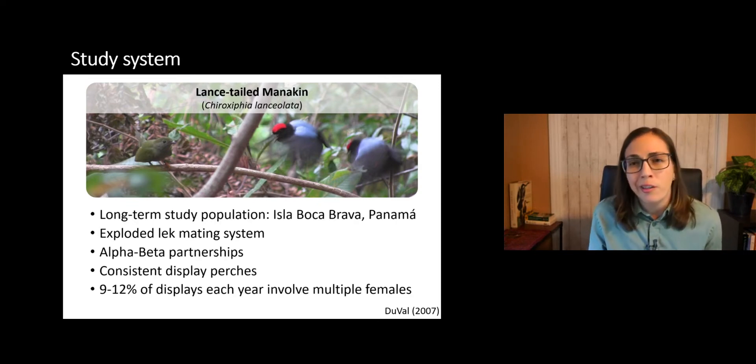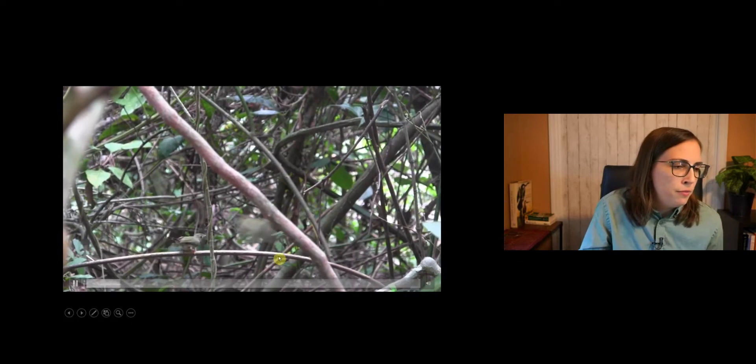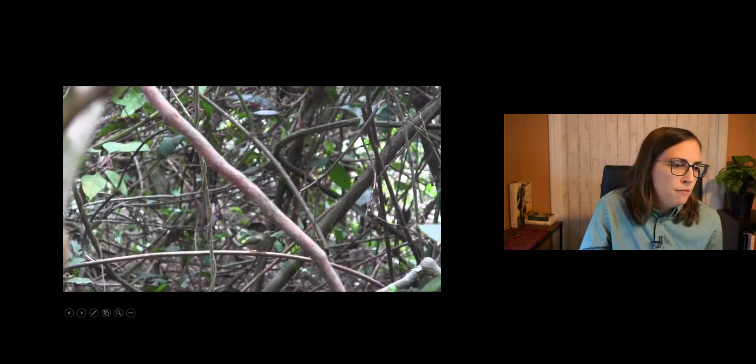Something that's particularly important for this study is that we have found that 9-12% of displays each year actually involve more than just one female observing the display at the same time. So this is a video clip from the end of the display with two females present. So here you can see one female, and then another female joins here, and you can see the male finishing up his display, and soon he's going to make a very clear choice. So the male is having to make a choice between the two females present, and whether or not this choice is entirely random or is based on a particular aspect of the female is the central question of this study.